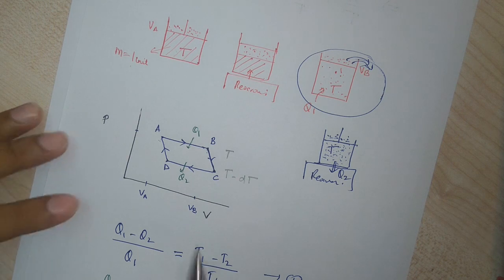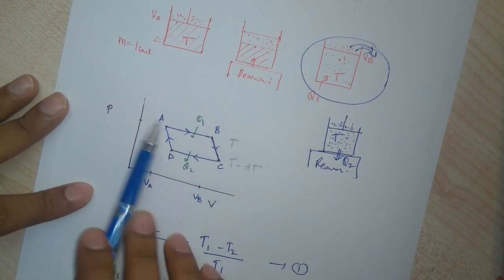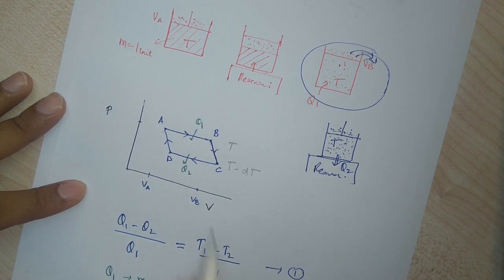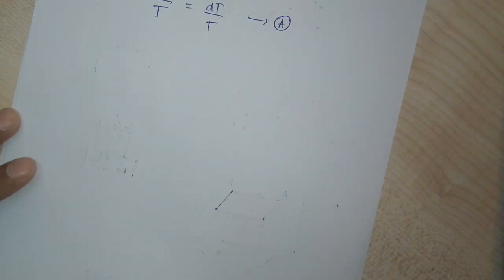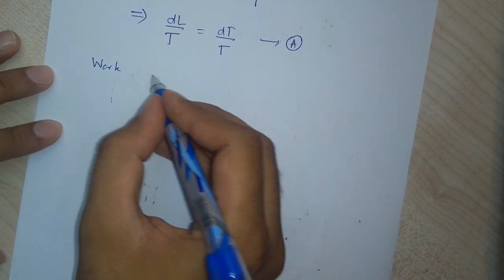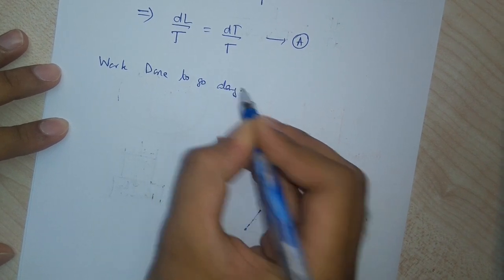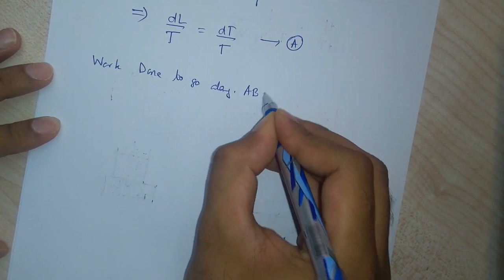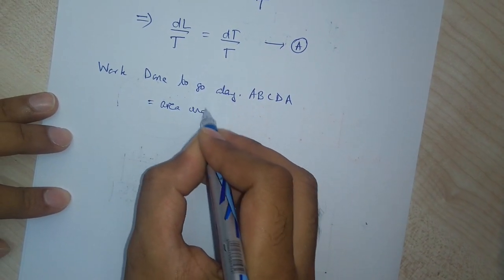Now we find the amount of work done along the path A, B, C, D, A. The work done in going along this path is nothing but the area under the curve in the PV diagram, as we have already established.